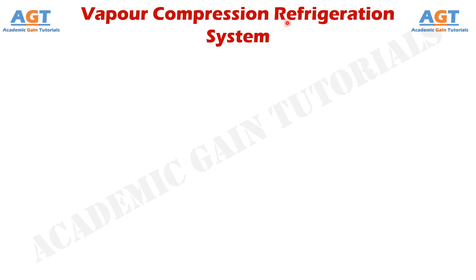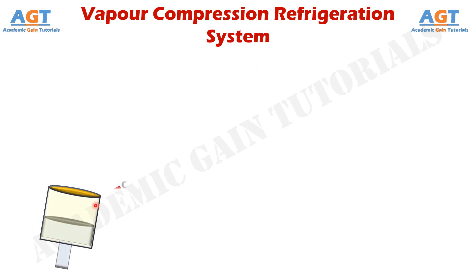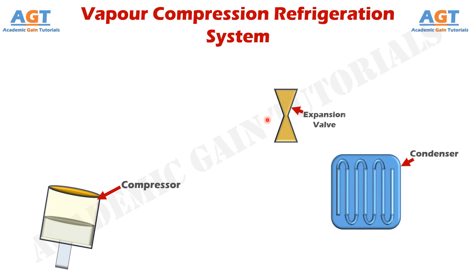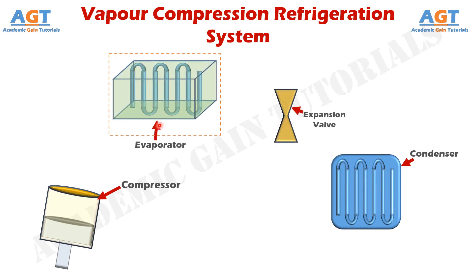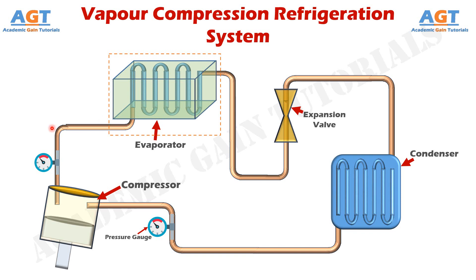Let's look into the major parts and components and basic working procedure of the vapor compression refrigeration system. There is a compressor, after that a condenser, then an expansion valve or throttle valve, and finally an evaporator. These four major components together construct the vapor compression refrigeration system. All these components are connected together using connecting pipes, thus forming a closed loop system, and the refrigerant flows through all these components and pipes.